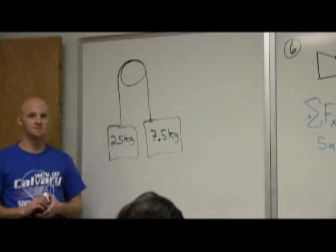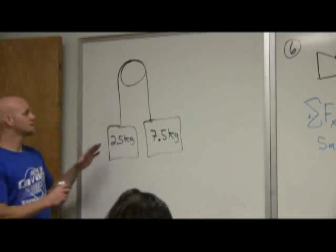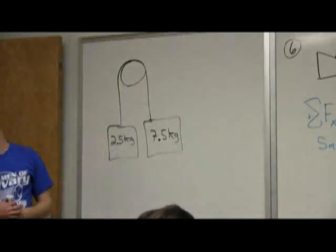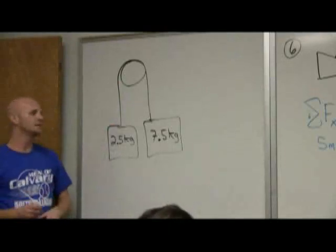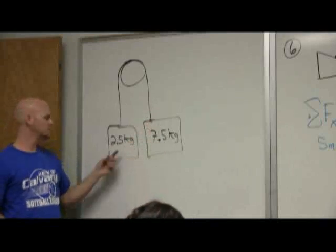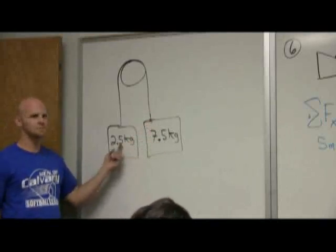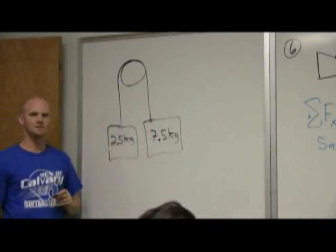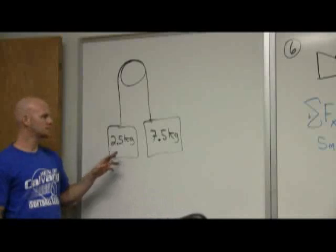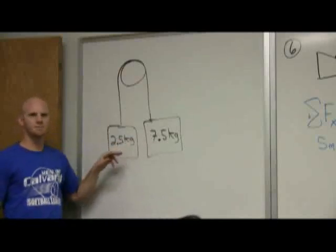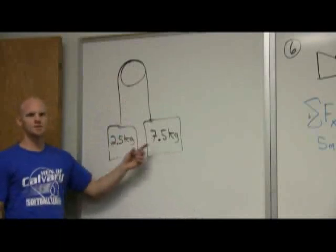So first of all, if we've got a frictionless pulley here, problem nine says for pulley two, what is the acceleration of the 7.5 kilogram mass? Now let's look at this for a minute. If I pull this guy down, what's going to happen to this guy? He's going to pull up. Because these are connected by a rope, can either one of these really move independent of the other? No. Whatever one does, the other does.